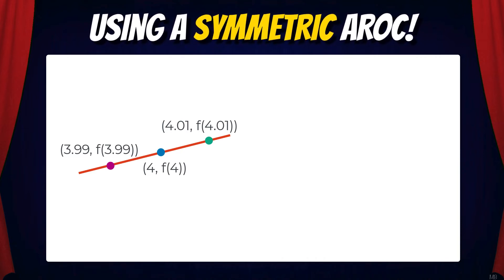So here I've chosen 4.01 and 3.99. Then I'm going to find the average rate of change. That would give us f(4.01) minus f(3.99) over 4.01 minus 3.99. That's going to reduce to 0.250.